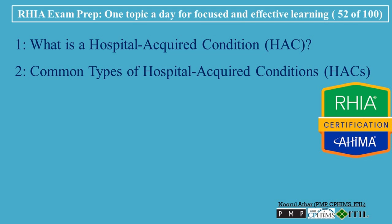Common Types of Hospital Acquired Conditions: There are several types of HACs, and each one represents a serious risk to patient safety. The first type is Healthcare Associated Infections, HAIs — infections that patients acquire while receiving treatment in a hospital or healthcare facility. Common HAIs include catheter-associated urinary tract infections, CAUTIs, central line-associated bloodstream infections, CLABSIs, and surgical site infections, SSIs. These infections can be life-threatening and are often preventable with proper hygiene and infection control practices.